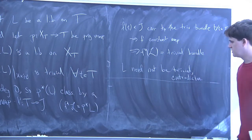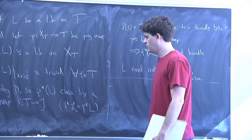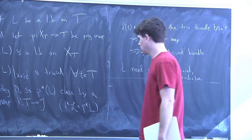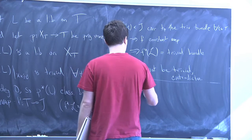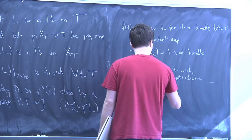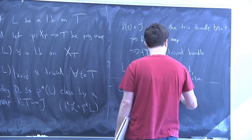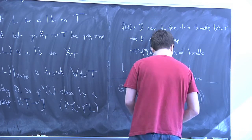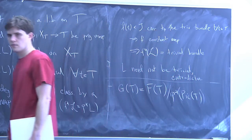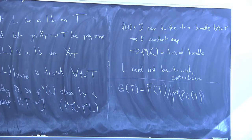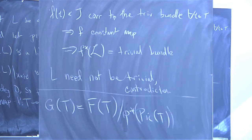The easy fix is to kill off the things causing the problem. Define G(T) = F(T) modulo the subgroup of things that come from line bundles pulled back from T. If T is a field, Pic(T) = 0, so G(T) = F(T). So G has the same k-points as Pic⁰(X) and avoids the first obstruction. But this thing is still not representable — there is a second problem.